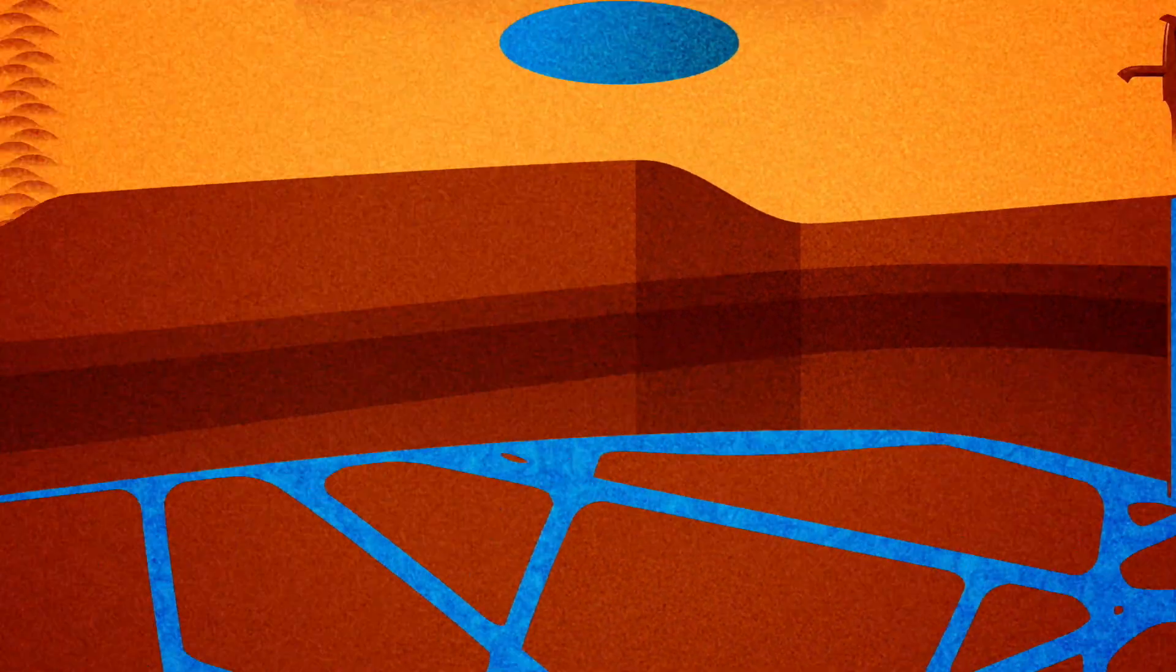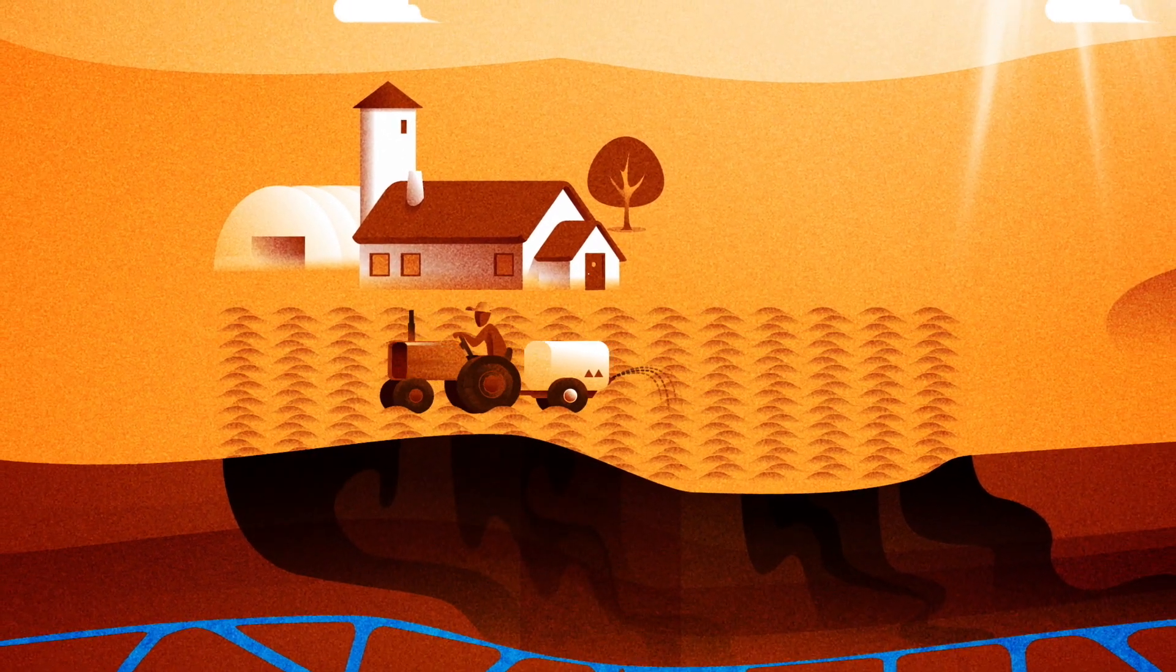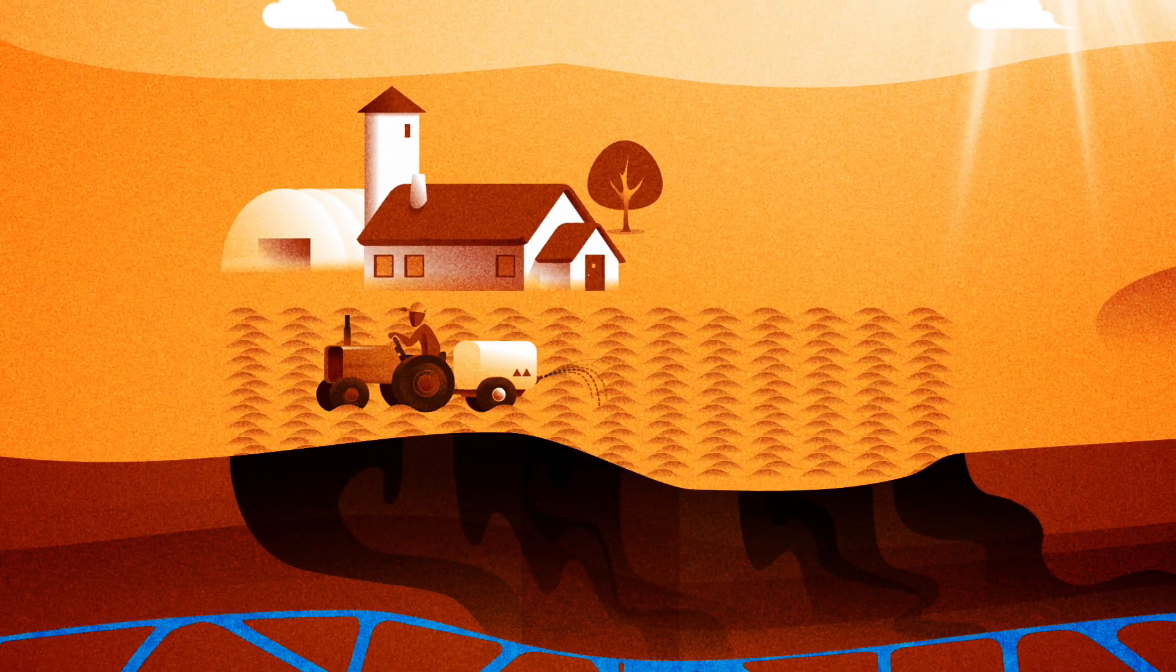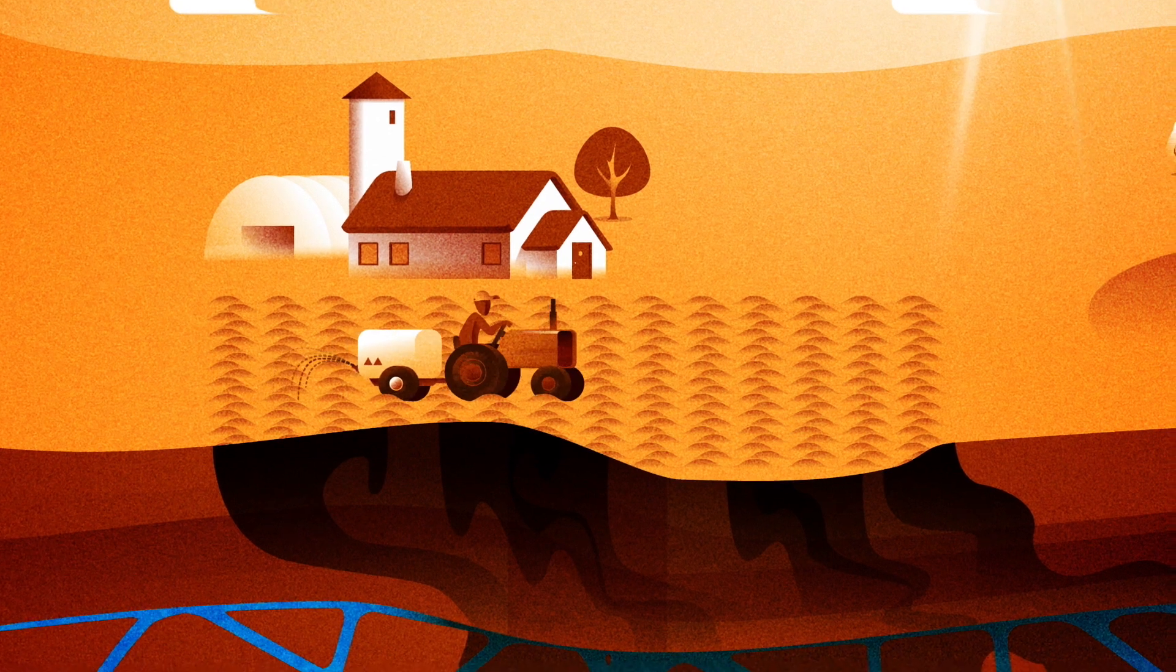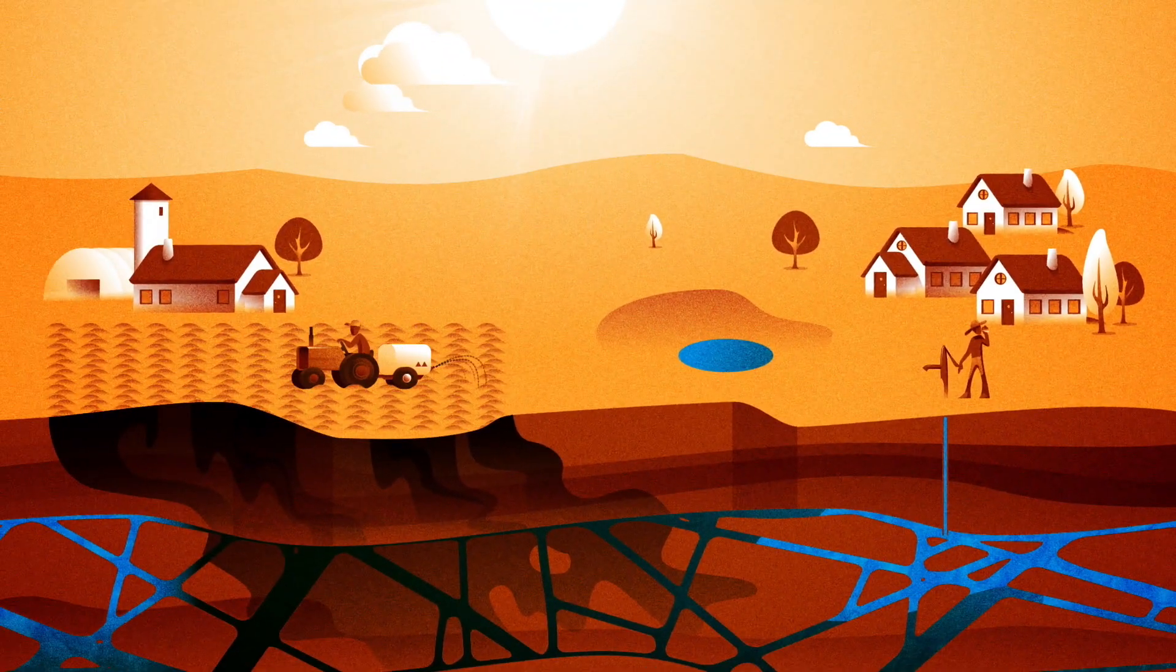Some communities may be polluting the groundwater reserves unknowingly through farming activities. A valuable resource could become seriously contaminated, just because we can't see what effects our actions have below ground. This has consequences for everyone using the aquifer.